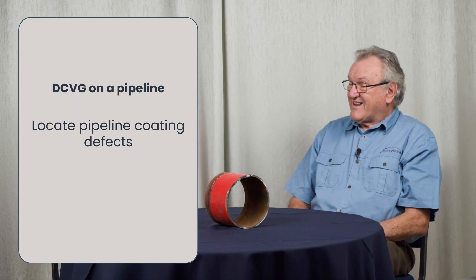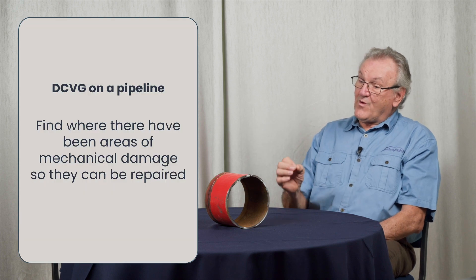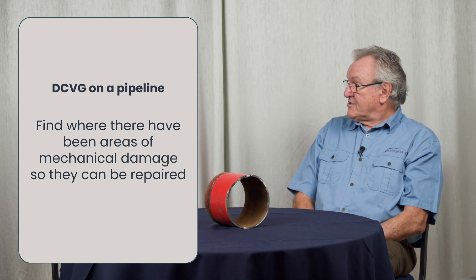The DCVG survey is primarily used to locate pipeline coating defects. When a pipeline is constructed, the intention is to install it with no coating defects. However, these pipes weigh tons and are handled by cranes, bulldozers, and side booms, so there's a good chance the coating will get damaged during installation. Probably the most important function of DCVG immediately after installation is to find areas of mechanical damage so they can be repaired, ensuring the pipeline doesn't start off with a compromised coating.